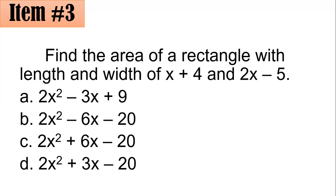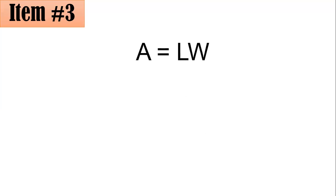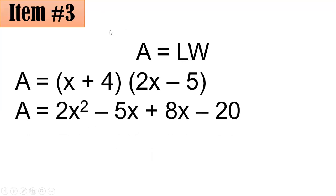For this one, we know that area of a rectangle is length times width. And we have to multiply the x plus 4 and 2x minus 5 using the distributive property or simply you could utilize the FOIL method. And doing such, x times 2x will be 2x squared. x times negative 5 is negative 5x. 4 times 2x is plus 8x. And 4 times negative 5 will be negative 20.